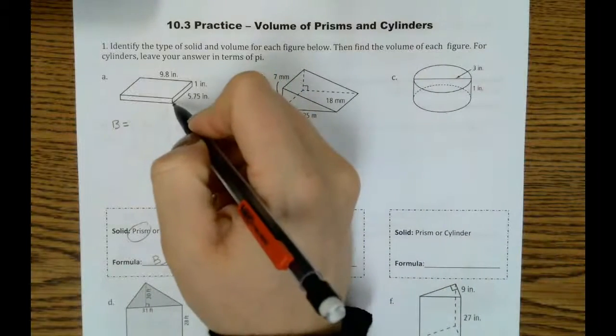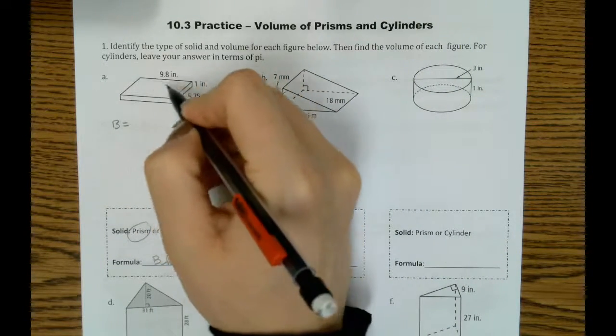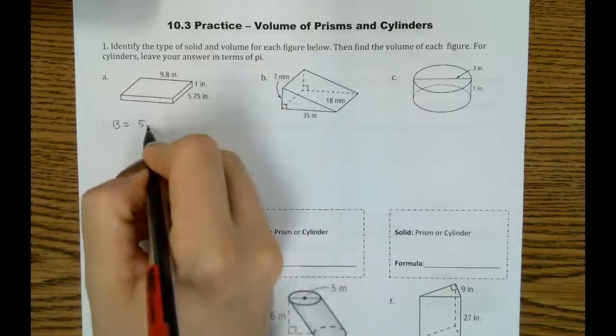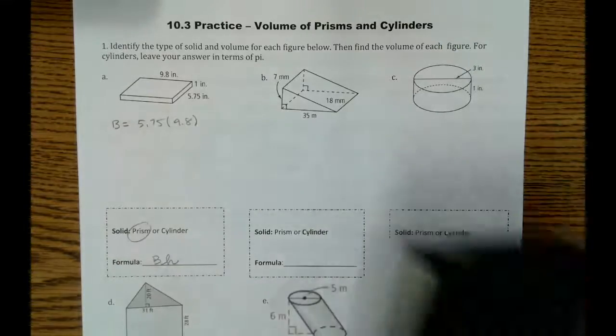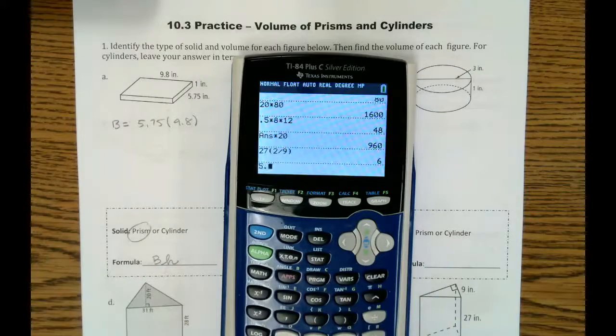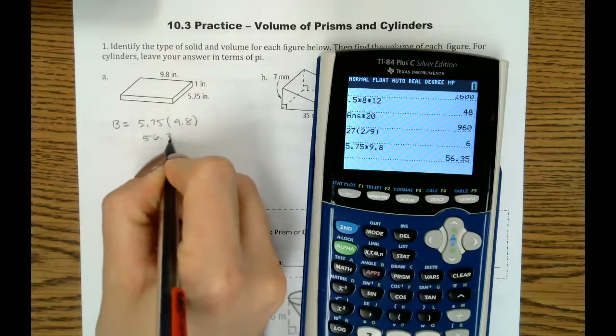So if you look at our base here, we have 5.75 by 9.8. So if we multiply those together, we get 56.35.